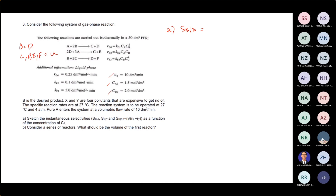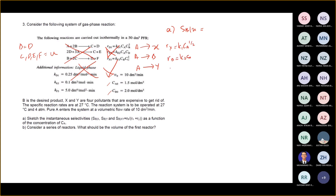Wait — I notice my question seems different. I gave the wrong question by mistake. It should be A to X, A to B, and A to Y. So: RX = K1·CA to the half power, RB = K2·CA, and RY = K3·CA squared.